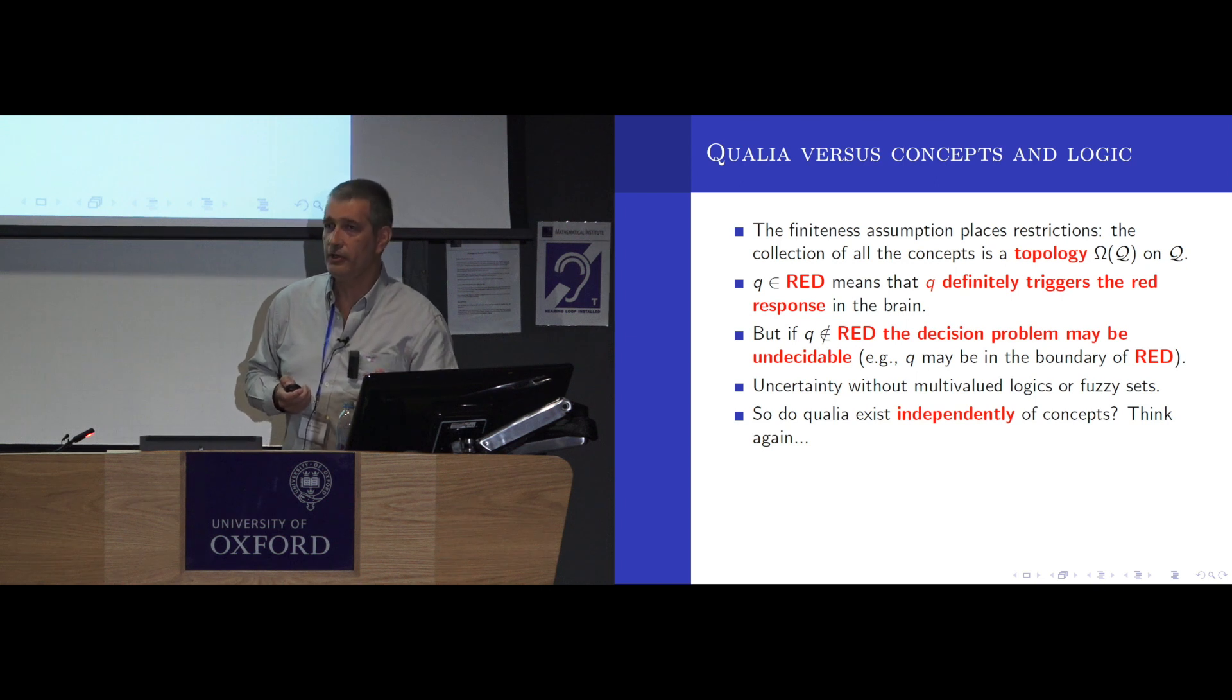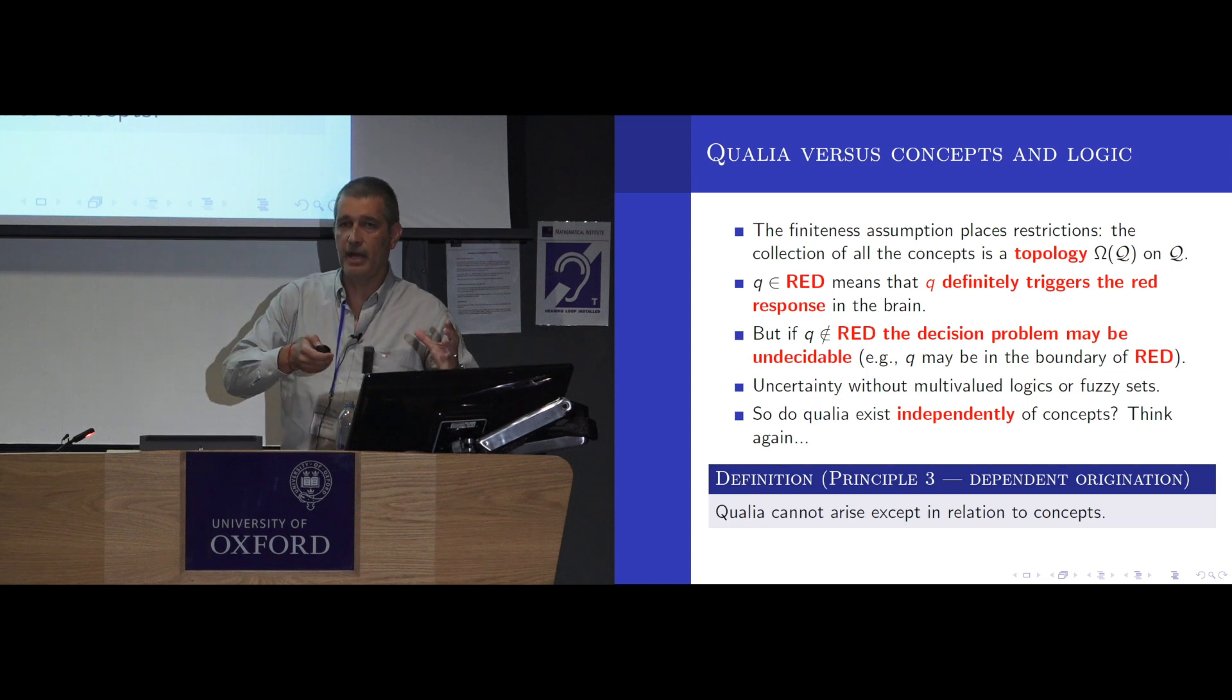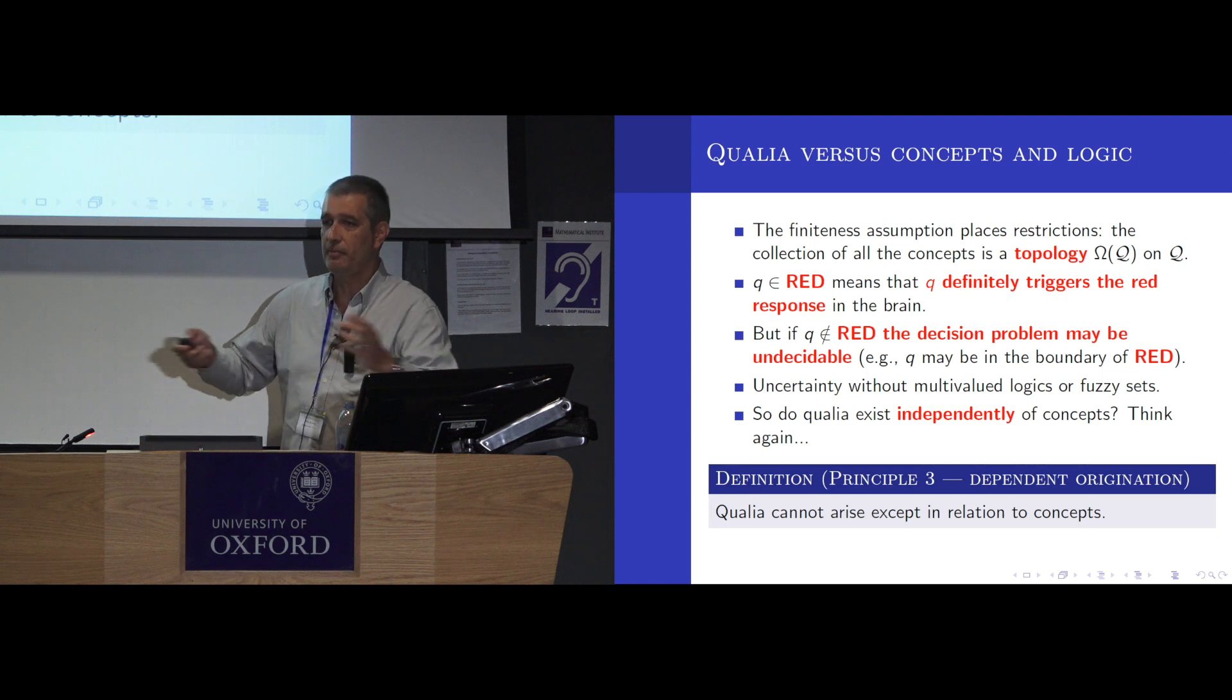So neither the qualia nor the concepts precede each other. So I call this principle three, saying that qualia cannot arise except in relation to concepts. They sort of arise hand in hand. It's like two facets of reality. The qualia being the mental aspect and the concepts being the physical aspect. But they're not separate. This reminds me of a notion in philosophy that I don't know very much about, but it's called dual aspect monism. So we've got two facets of reality.